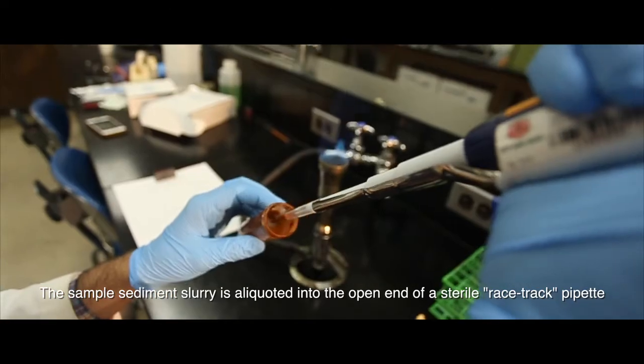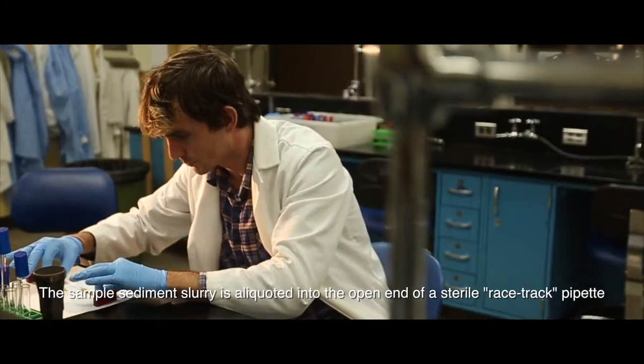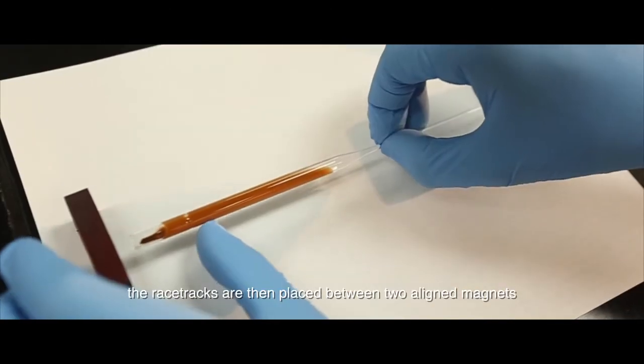The sample sediment slurry is aliquoted into the open end of the sterile racetrack pipette. The racetracks are then placed between two aligned magnets.